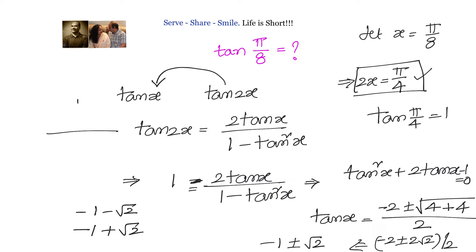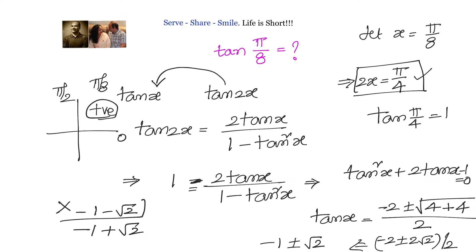Since all trigonometric ratios are positive in the first quadrant, and π/8 lies between 0 and π/2, all ratios must be positive. So the negative option is rejected, and our answer is tan(π/8) = √2 − 1.